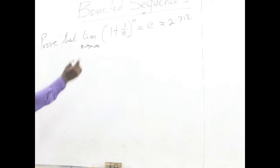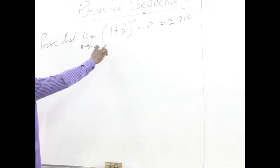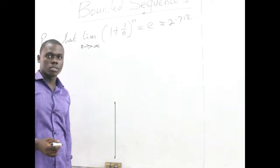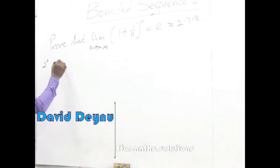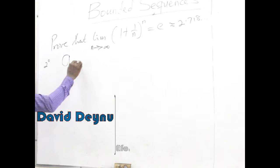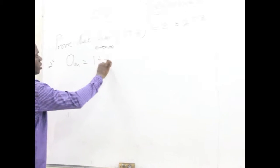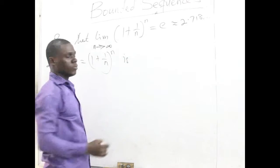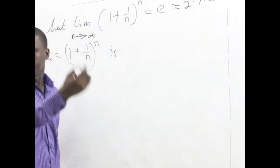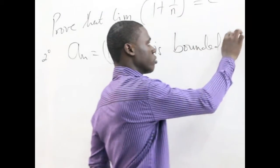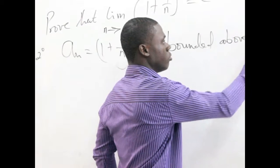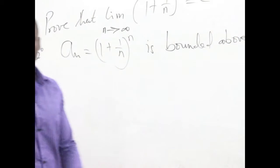We look at the second aspect of the proof, showing that this sequence, even though it is strictly increasing, it won't exceed 3. So we have that this particular sequence, (1 + 1/n)^n, if it is increasing but not exceeding 3, it means it is bounded — bounded above by 3.